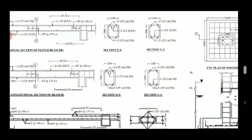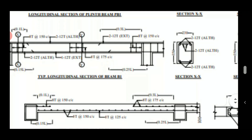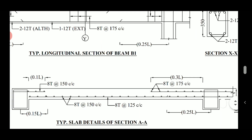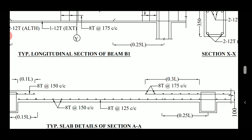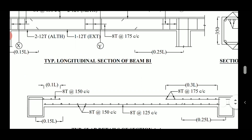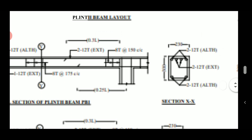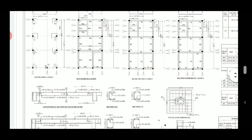Now for the slab reinforcement details: at the bottom, 8 mm bars at 150 mm c/c are provided along one direction and 8 mm bars at 125 mm c/c along the other direction. At the top, 8 mm bars at 150 mm c/c are provided along both directions. We will discuss more about slab reinforcement in upcoming videos.